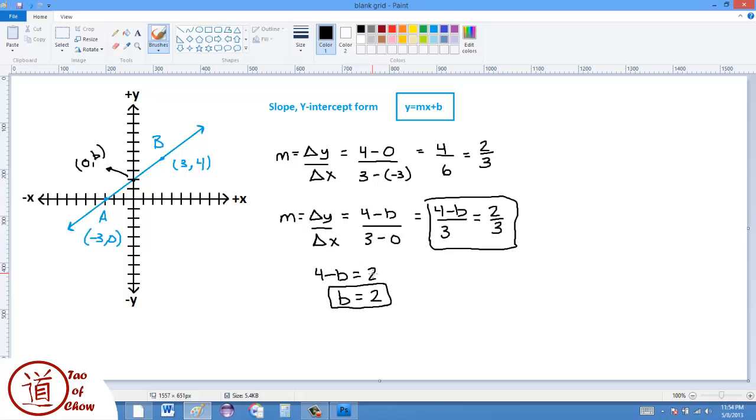Okay, now given that, what I can then do is plug the numbers into this slope y-intercept form of the equation. So I would get y is equal to m, which is this slope, 2 thirds, x plus b, which is 2. So 2 thirds x plus 2. And this is the equation of this line.